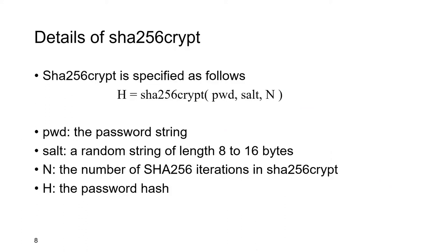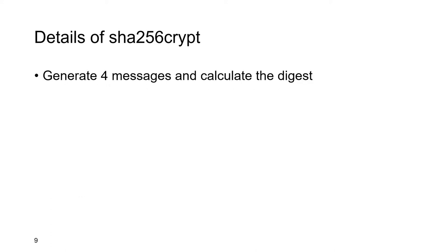To find out what is special in SHA-256-crypt, we should first take a deep look into its details. SHA-256-crypt takes a password string, a random salt string, and an iteration counter n as input and outputs the password hash h. Inside the function, we first need to generate four messages and calculate their SHA digests. Assuming the password is 6 bytes and the salt is 8 bytes, message A is generated by appending the password, salt, and password. Then we calculate the SHA digest of message A to get digest A.